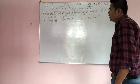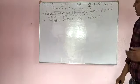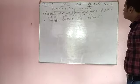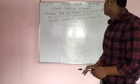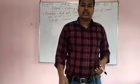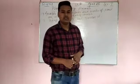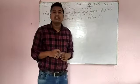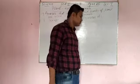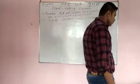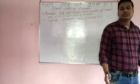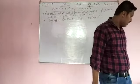So animals that eat plants and parts of a plant are called plant-eating animals. For example, the elephant eats sugar cane, the cow eats grass, and the deer also eats some parts of a plant.